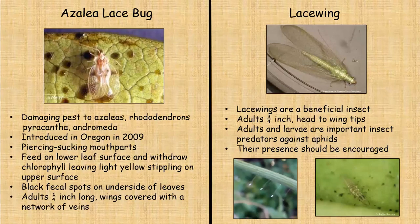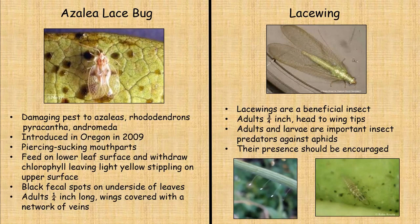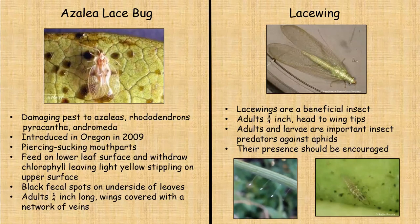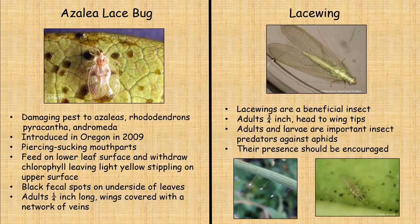If you grow rhododendrons or azaleas, you either have azalea lace bugs or you probably will in the future. This is a damaging pest to azaleas and rhododendrons, also found on Chaenomeles and Andromeda. These were introduced into Oregon in 2009. They have piercing-sucking mouthparts and feed on the lower leaf surface, withdrawing chlorophyll and leaving light yellow stippling on the top side of the leaves. On the underneath side, you can see black spots which are actually the fecal matter from the adult. The adults are about a quarter of an inch long and their wings are covered with a network of veins — quite beautiful under a microscope.